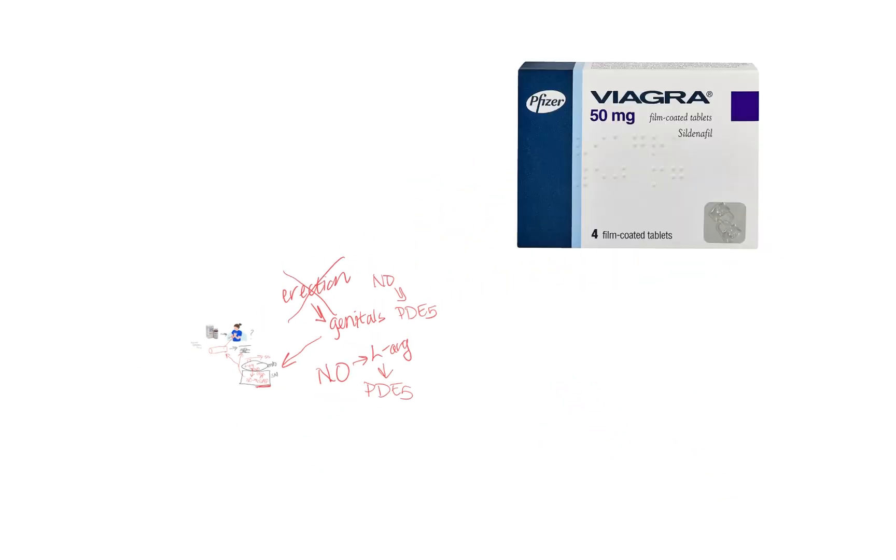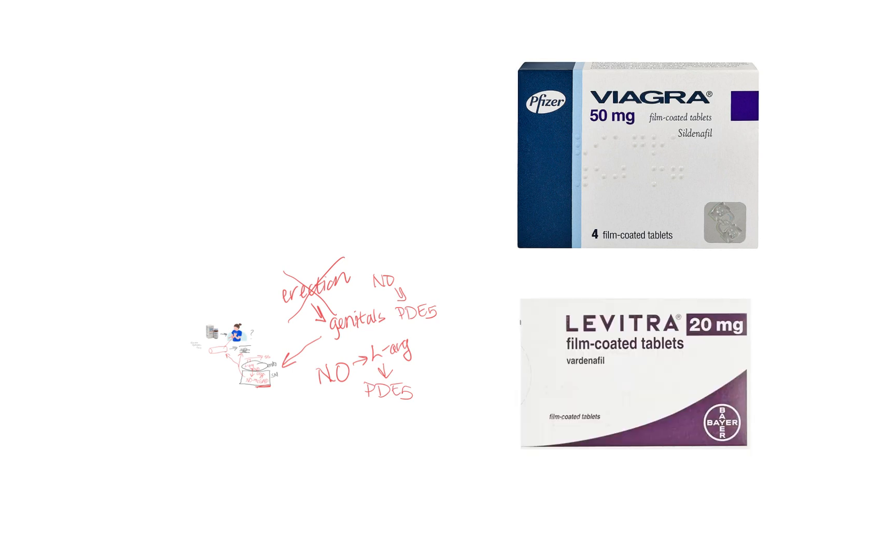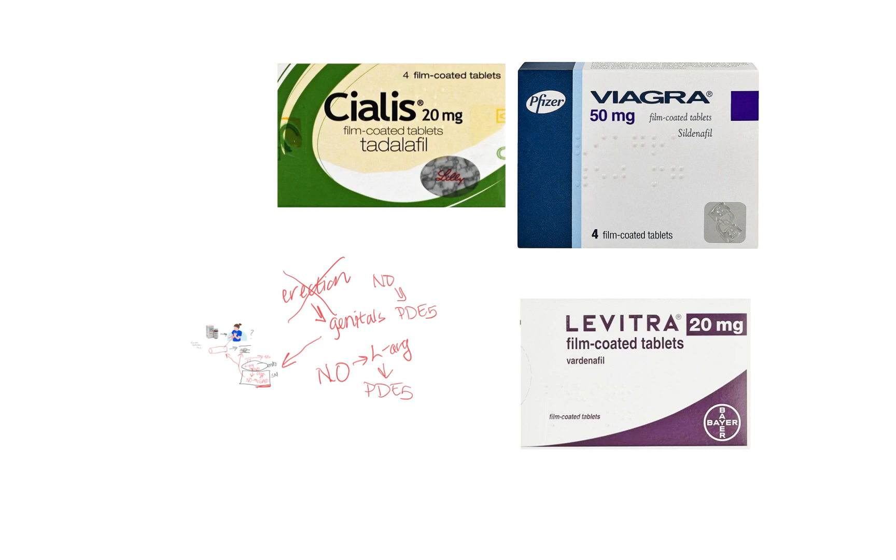So medications like sildenafil or Viagra, vardenafil or Levitra, and tadalafil sold as Cialis are all medications that act as nitric oxide donors, but specifically PDE5 inhibitors. So they allow the blood vessels to dilate and then also prolong that dilation by preventing enzymatic breakdown of the ENOS cascade.